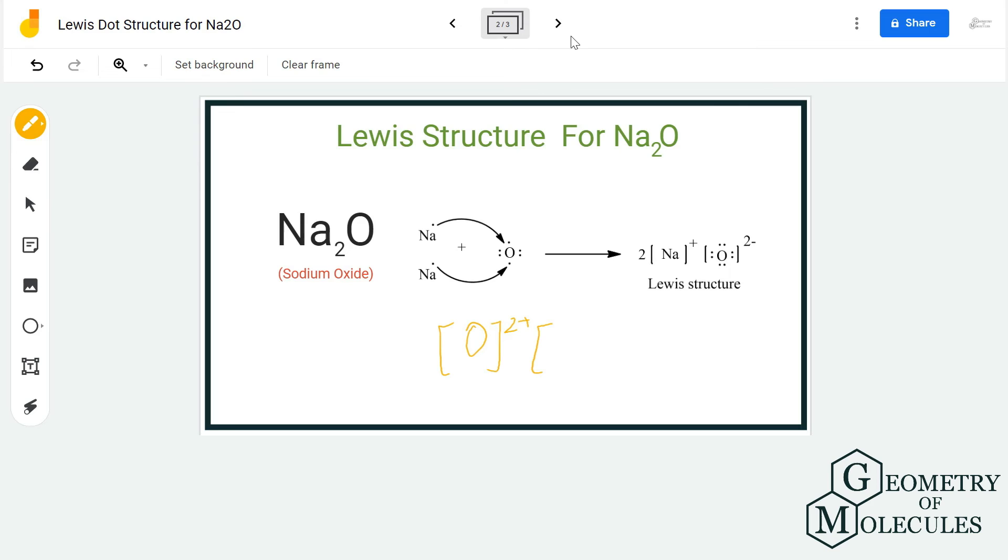Generally, ionic compounds have motifs in which they are arranged in a pattern, arranged one after the other. This is the chemical formula of how we represent sodium oxide. It is never made up of just one molecule.